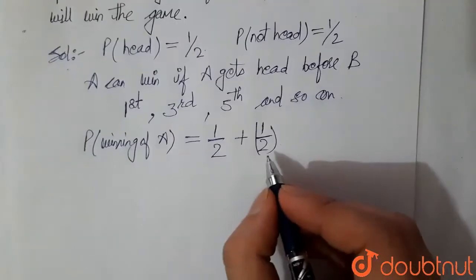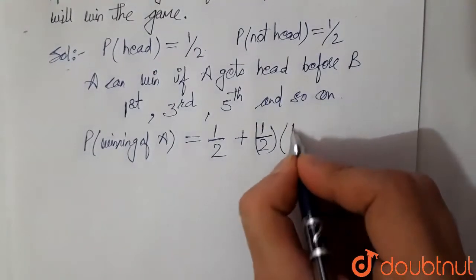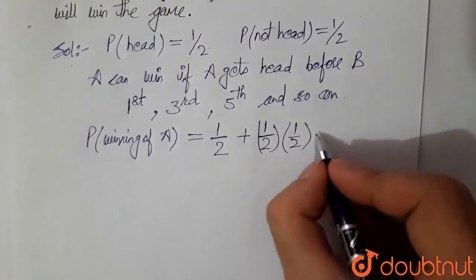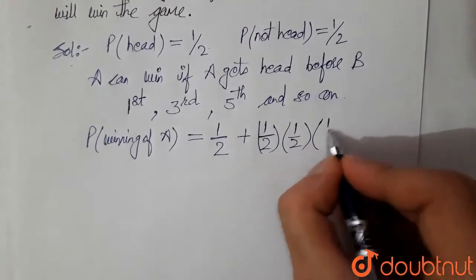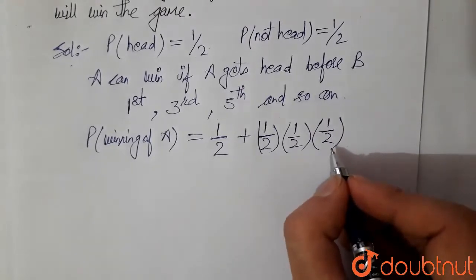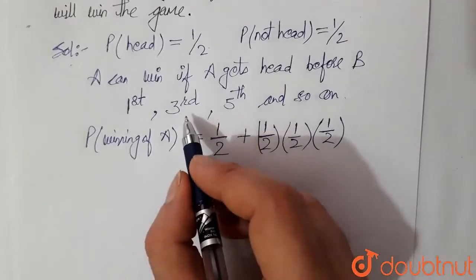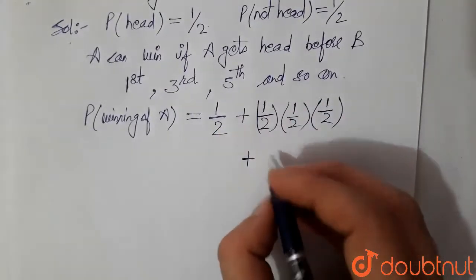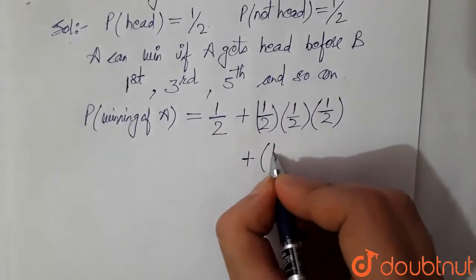So first try A fails, second try B fails, but third try A gets the head and wins the game. So this is for this case. Similarly, for fifth case also, it would be like this.